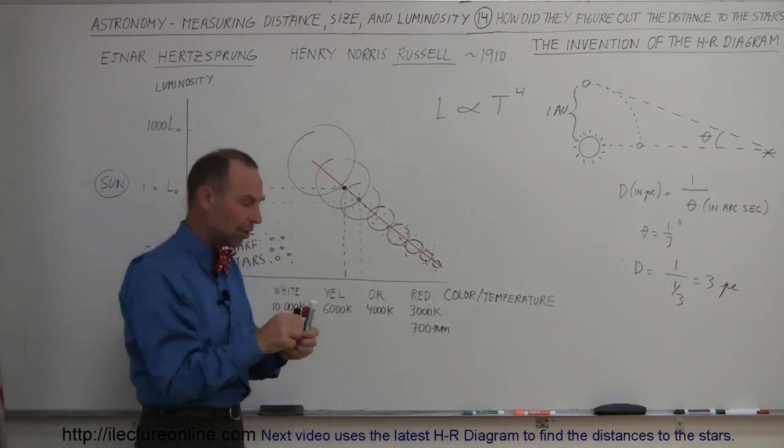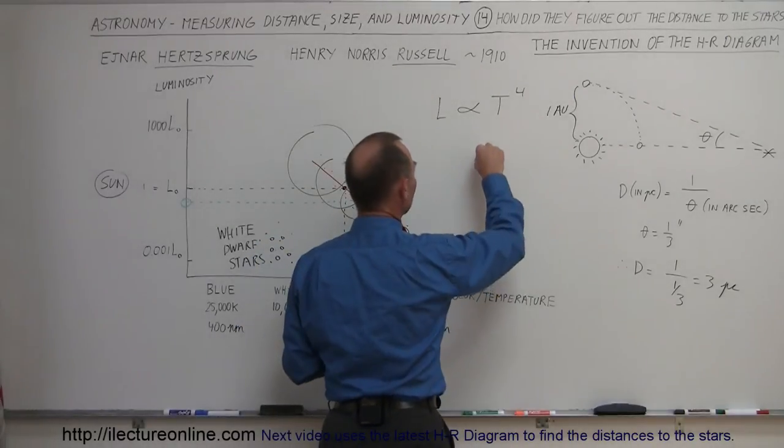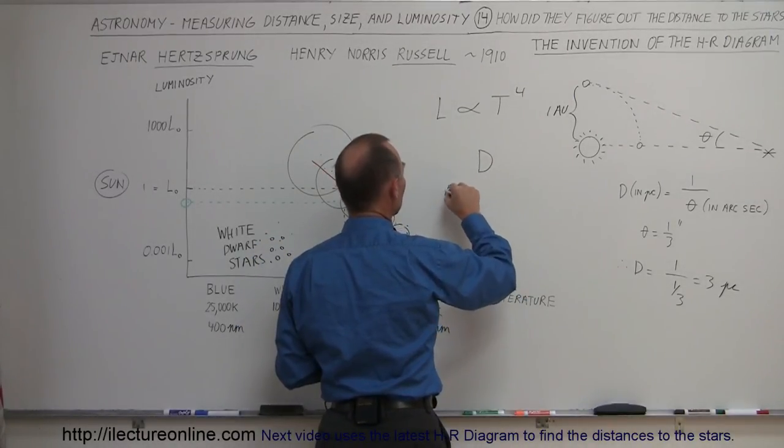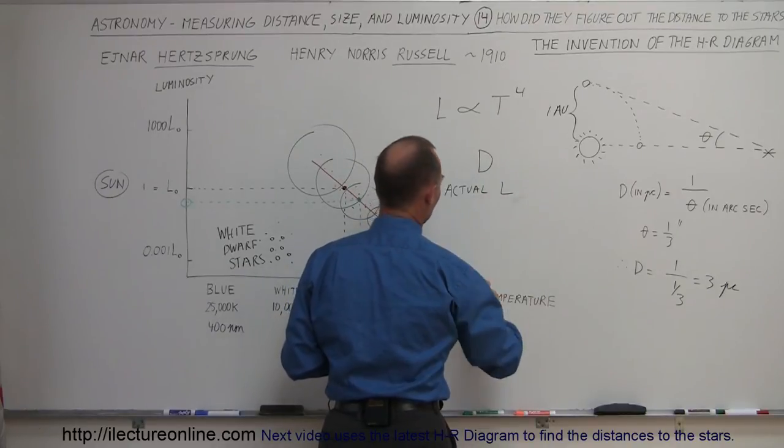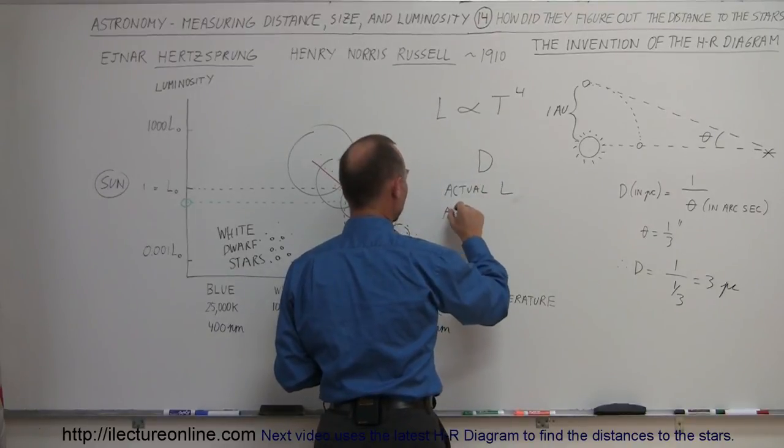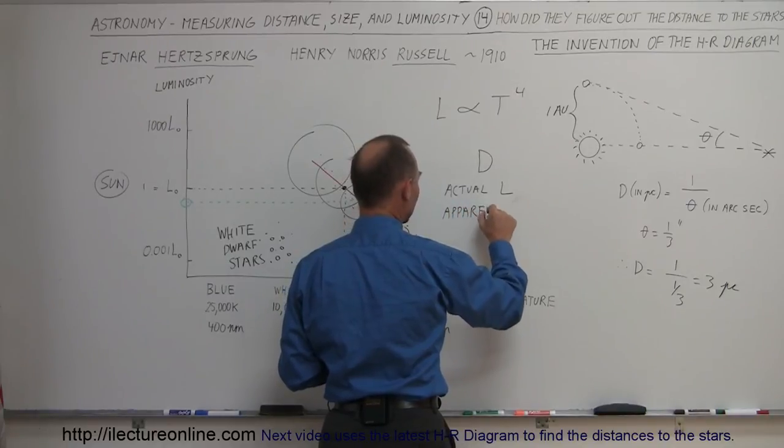Remember, there's three things you need to know. You need to know the distance of the star, you need to know the actual luminosity, and the apparent luminosity, how bright it appears to us.